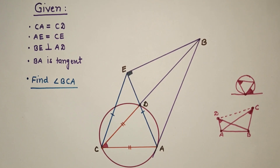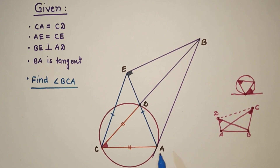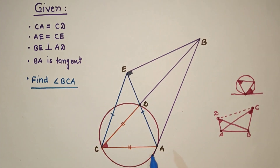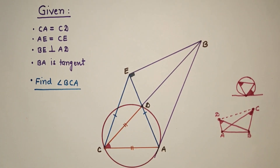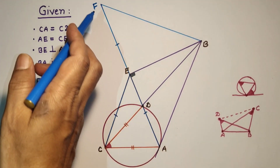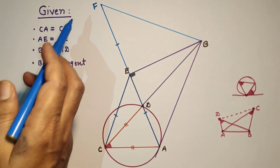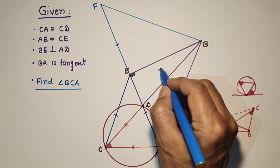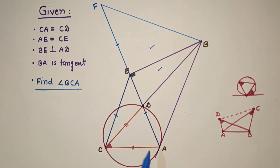We will use these two concepts in the solution. First, extend AE to F such that AE is equal to EF. So AE is extended to F, EF is joined, and by our construction AE equals EF.